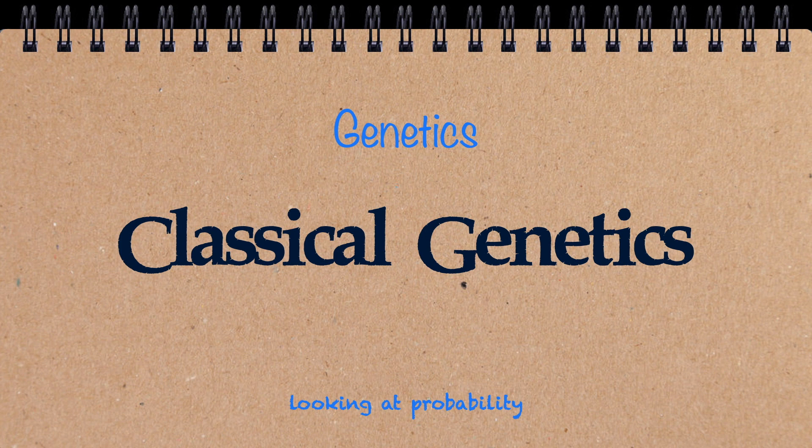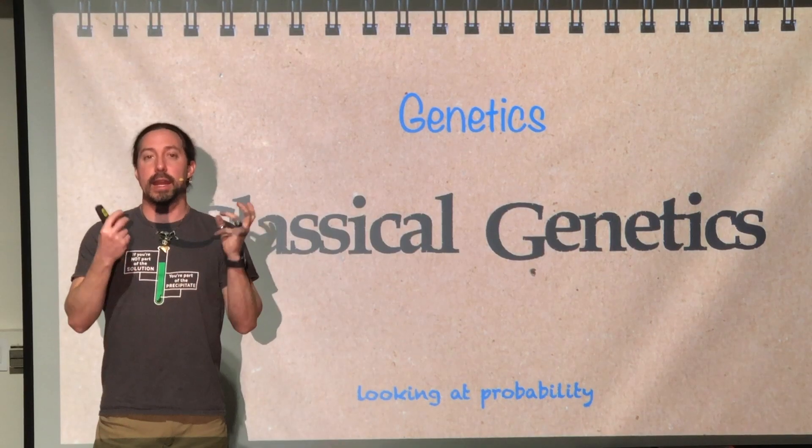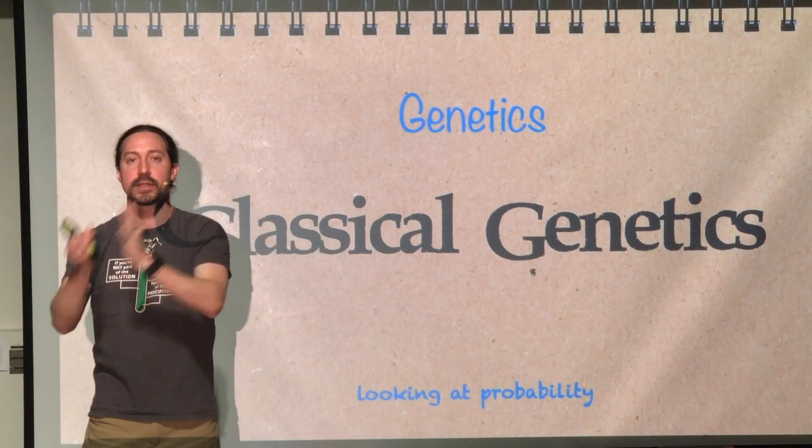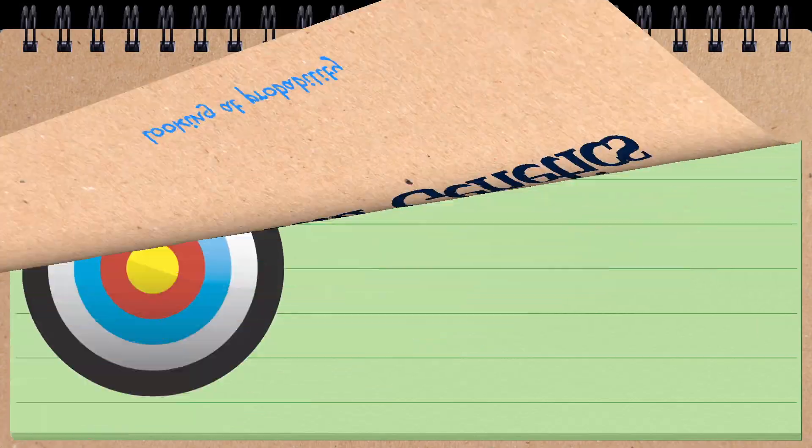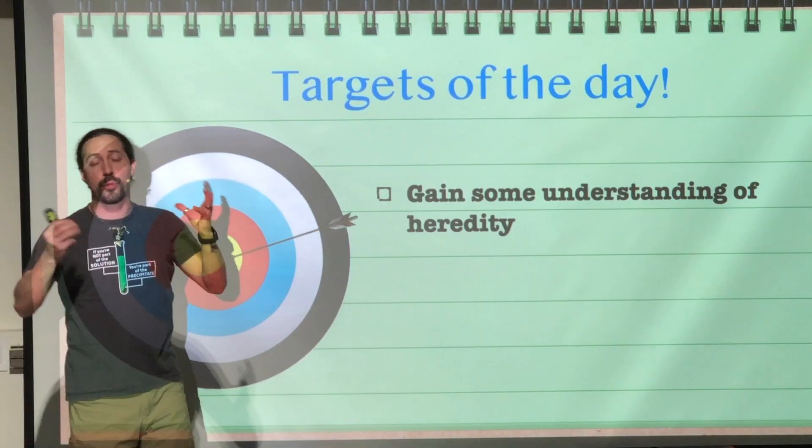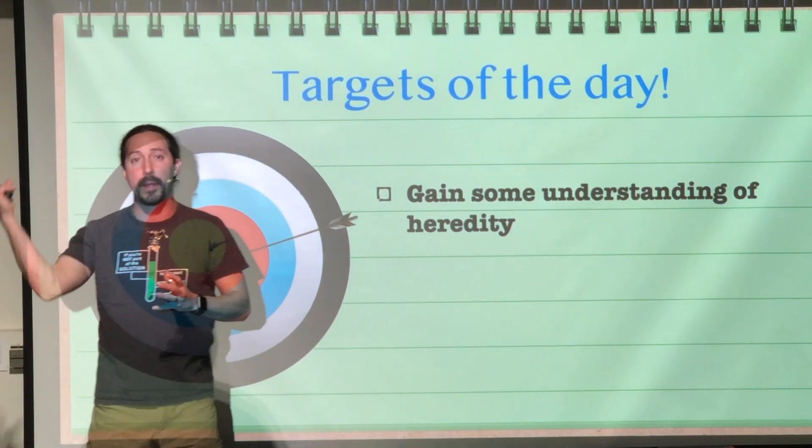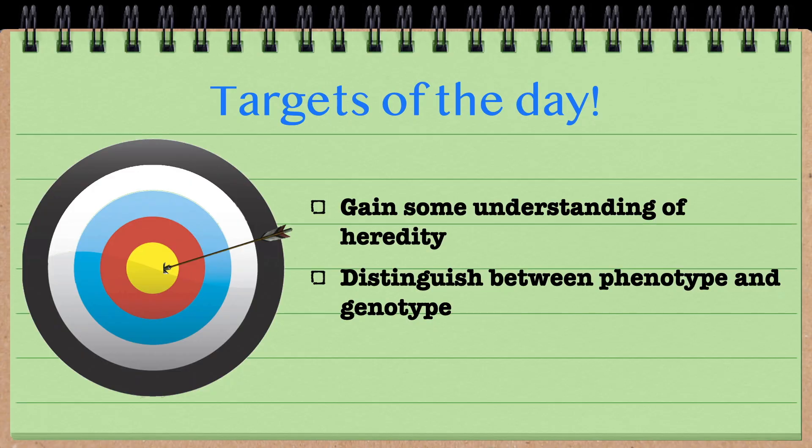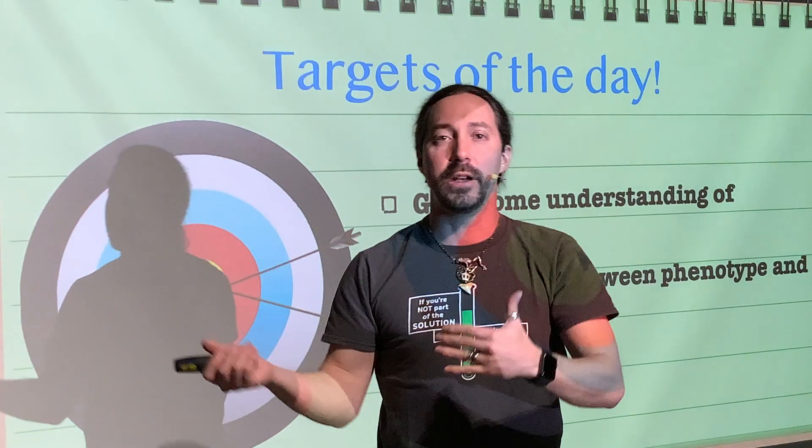We're going to be looking at a historical figure named Gregor Mendel and what research he did and how he tracked the way that traits moved from the parents to the offspring. Today's targets: first, gain understanding of heredity, that process of passing genes from parents to offspring, and distinguish between two different terms, genotype and phenotype. Let's get started.